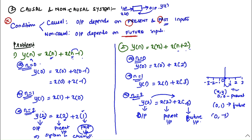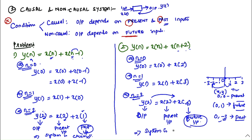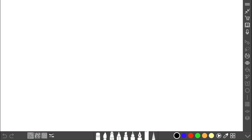We observe the present input, past input, and future input. If the future input is involved in the output, we conclude it is a non-causal system. So from those values, you can conclude whether it is causal or non-causal.